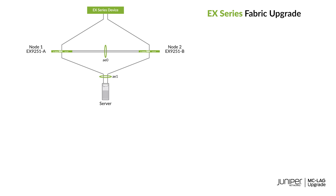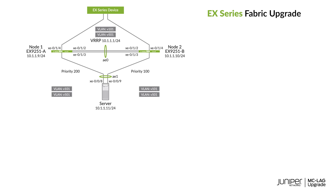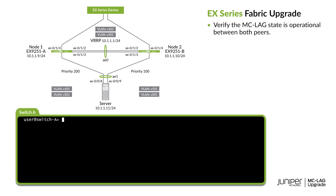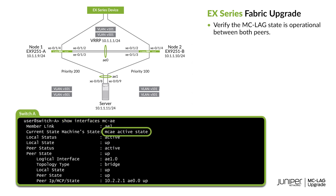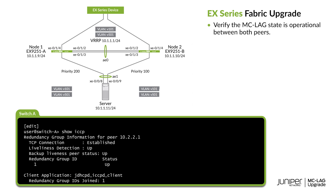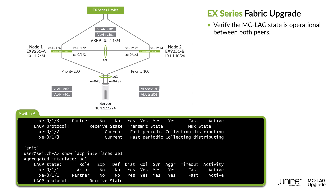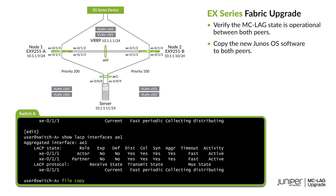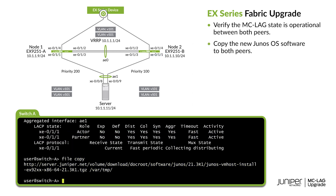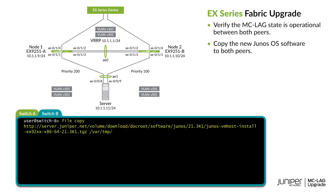This upgrade increases bandwidth and load balancing with improved redundancy. Before we begin, open a terminal window and check some parameters to verify that the MCLAG state is operational between both peers. With the interfaces showing as active, we can copy the new Junos OS software image to the var/temp directories on both peers.